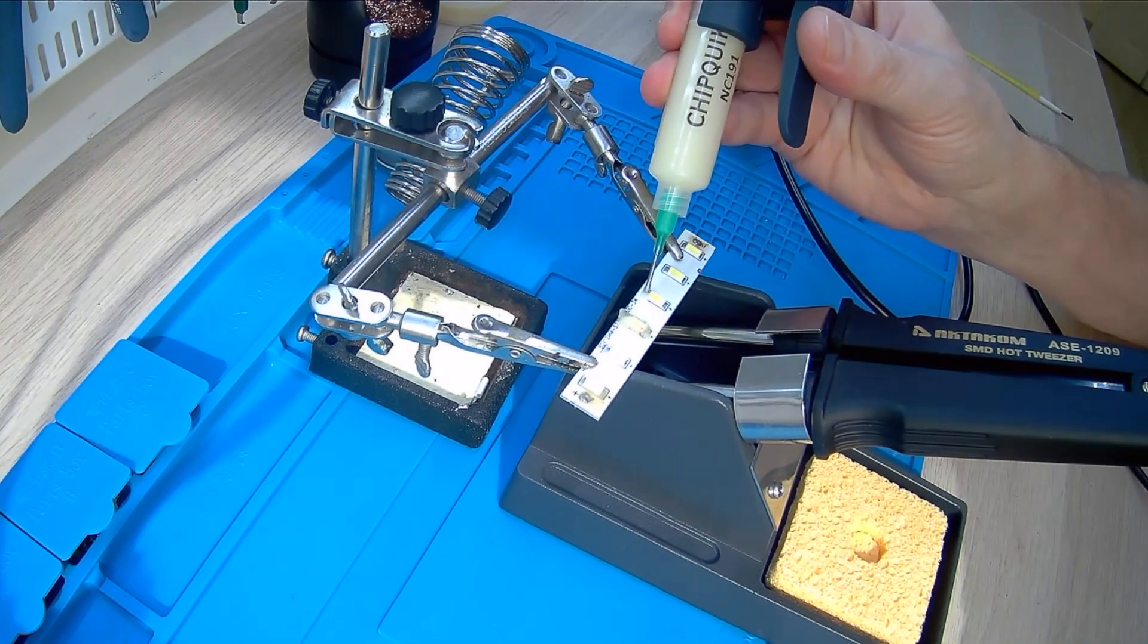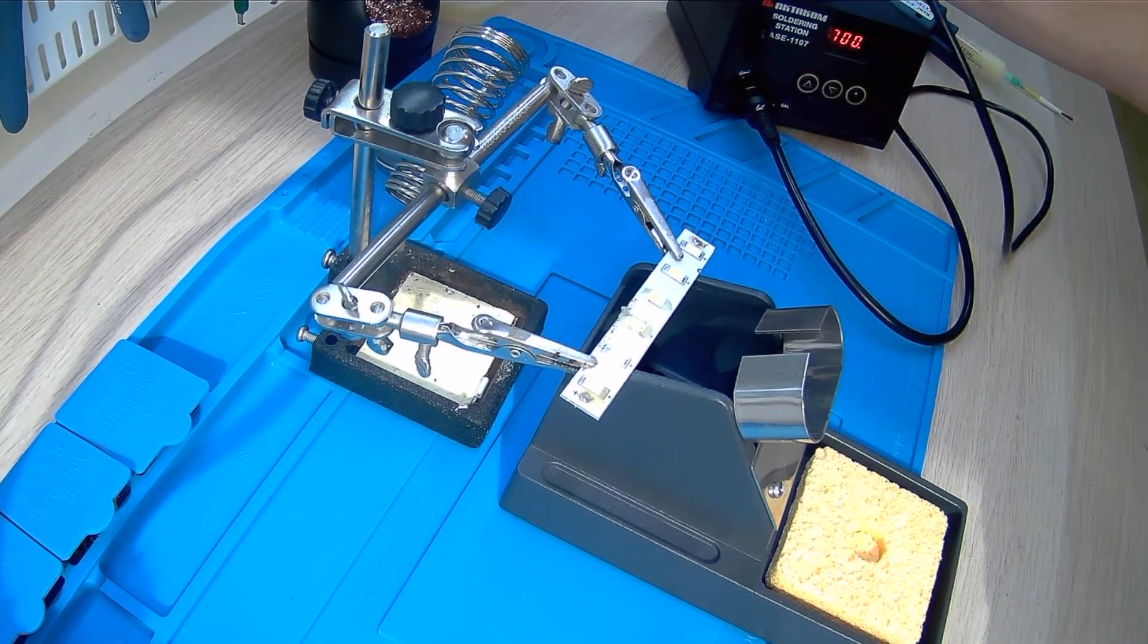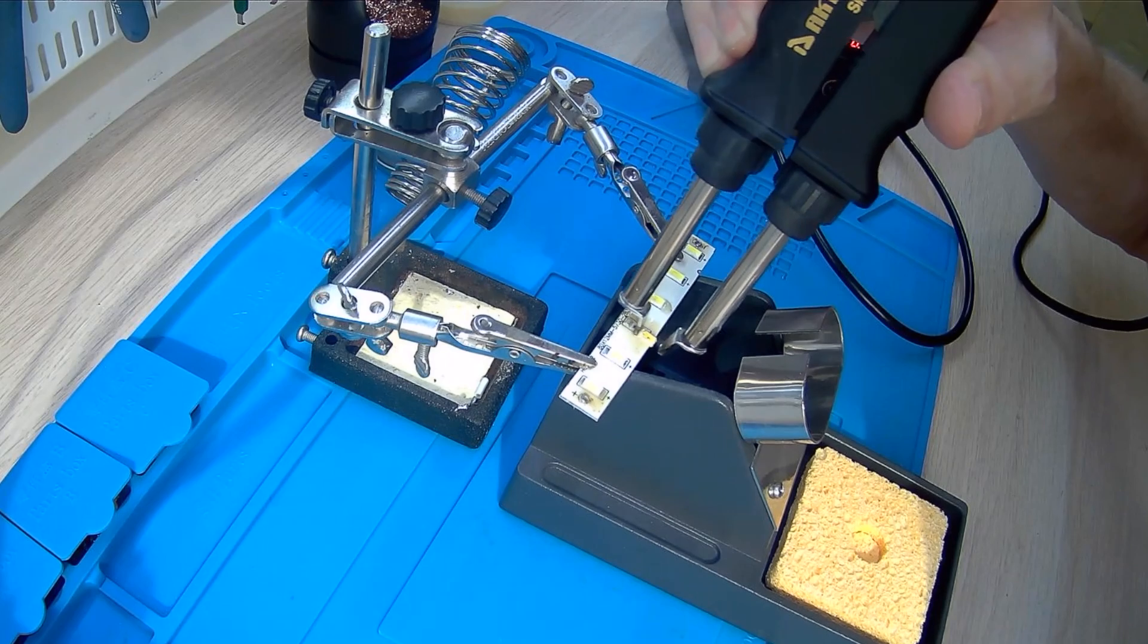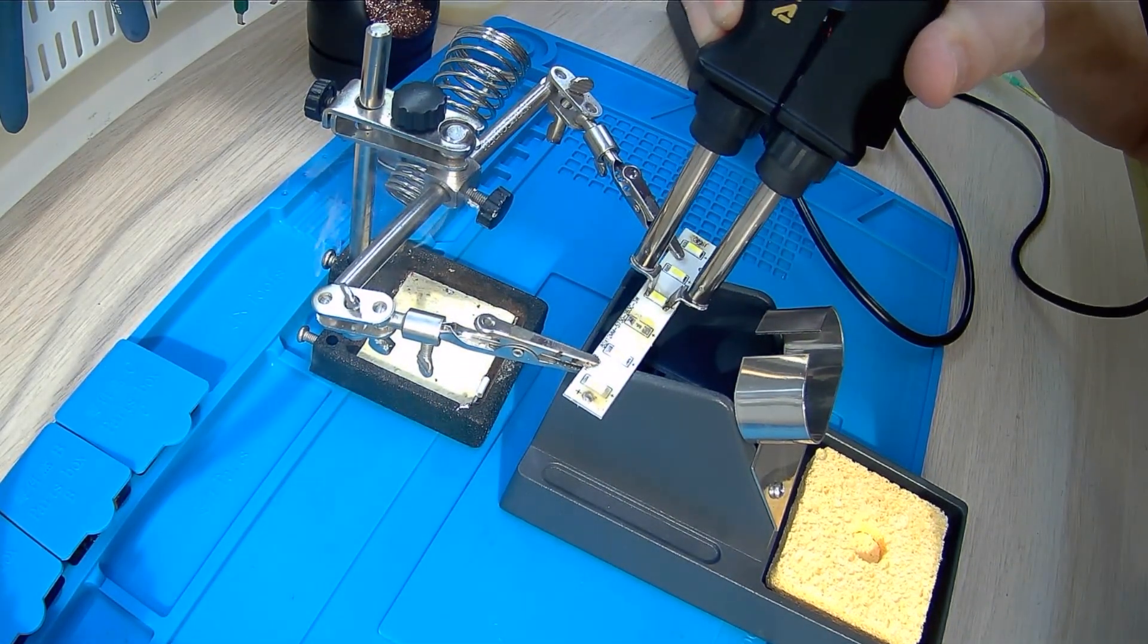Turning on the station. We apply flux to the soldering area and to the ends of the tips. We crimp the LED on both sides and that's it. Simple and fast, but you need to do it carefully.